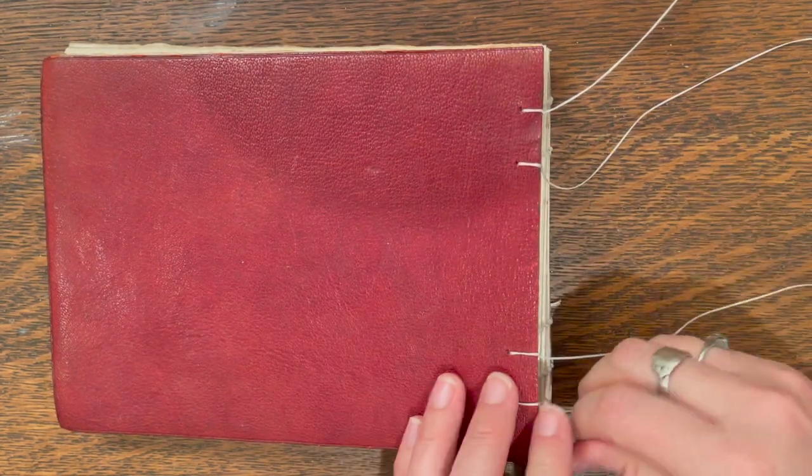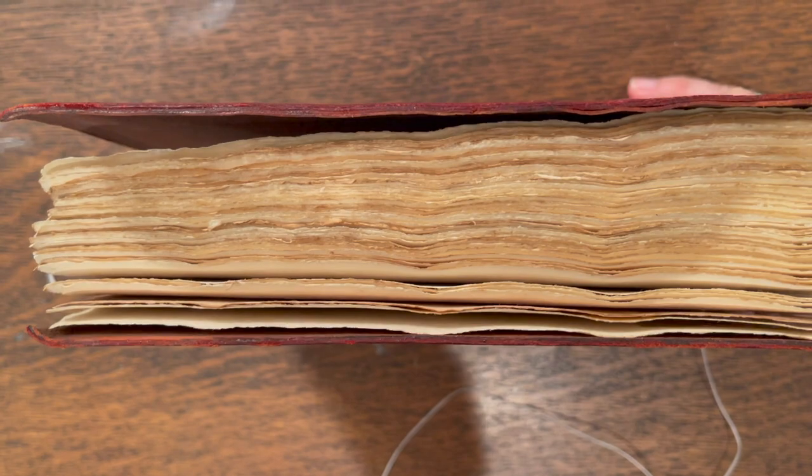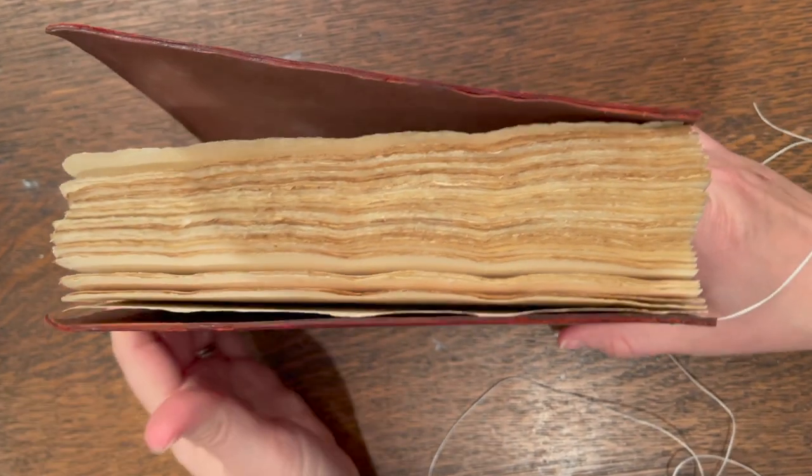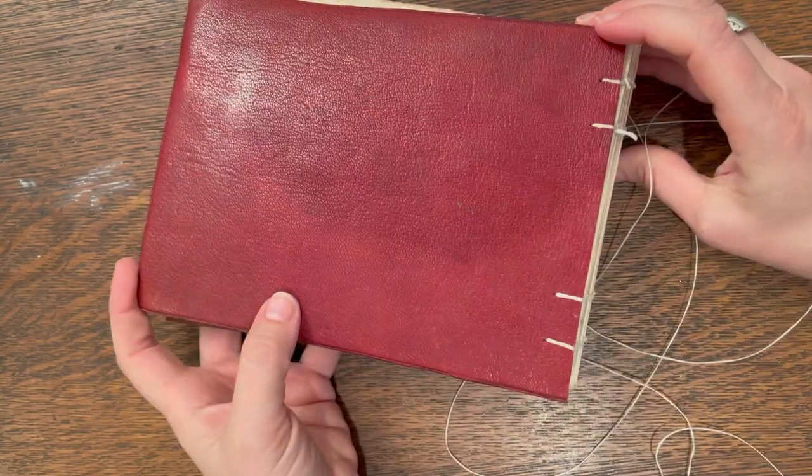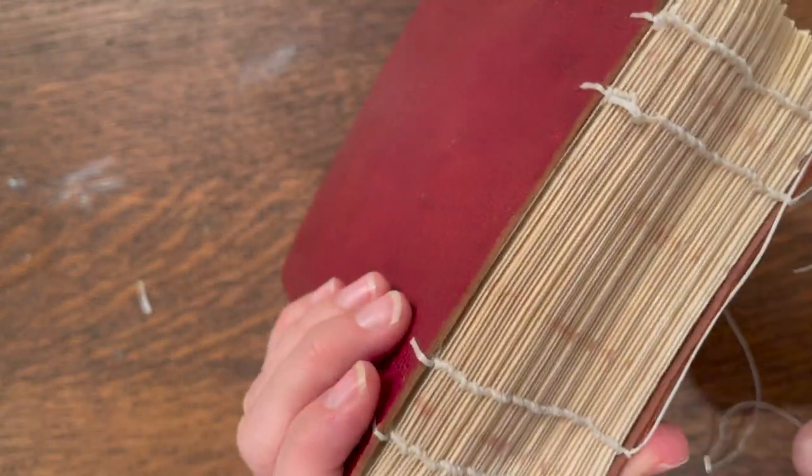There we go. I can see these are not straight. This is where my lack of precision kind of bites me sometimes, on projects like these. But there you go, there's my sketchbook. I'm going to tie it off and I think it's all done.